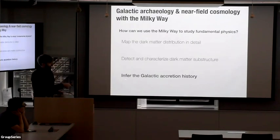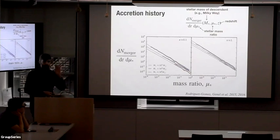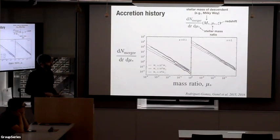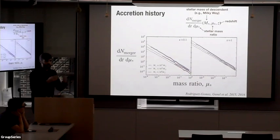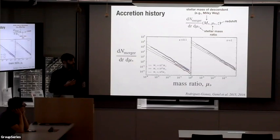The third goal is how we can use streams to infer or understand the merger history of the Milky Way — thinking in discrete events, like the number of mergers per unit time per unit mass ratio, which evolves with redshift and depends on the mass of the Milky Way. This is also something beginning to be predicted robustly from large galaxy formation and cosmological simulations, so we can try to uncover it in the Milky Way using stellar kinematic and chemical information.